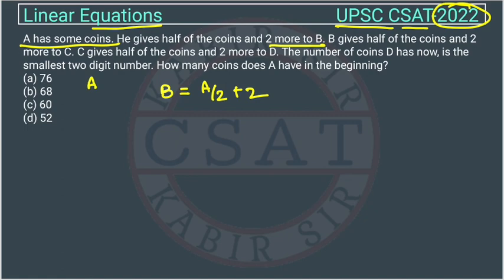B gives half of the coin and two more to C. Now C is having how many? C is equal to B by 2 plus 2.